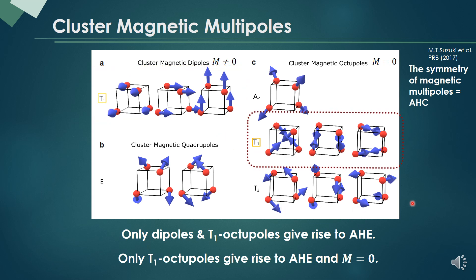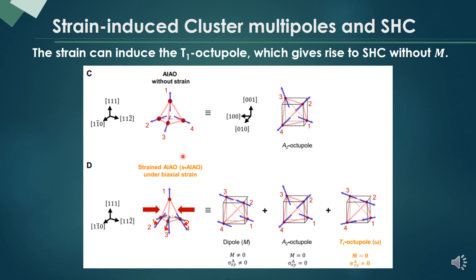Therefore, we might expect that T1 octupole only gives rise to the anomalous Hall conductivity without any magnetization. Therefore, we should study that T1 octupole can be induced in the strained film.